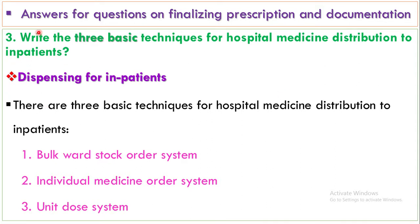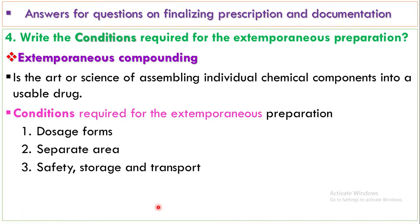The third question asks: what are the three basic techniques for medicine distribution in inpatients? Dispensing for inpatients has three major techniques. The first is bulk ward stock order — a bulk drug will be dispensed to an inpatient ward. The second is individual medicine order — individual medicine is prescribed and given to the patient. The third is unit dose — a single dose is given at a time.